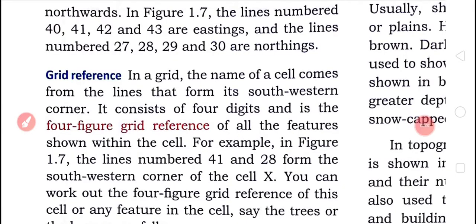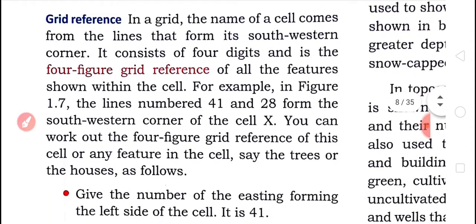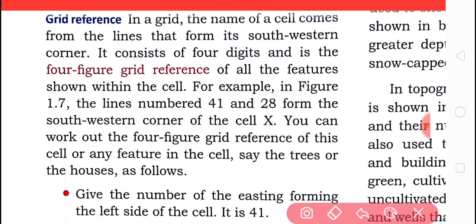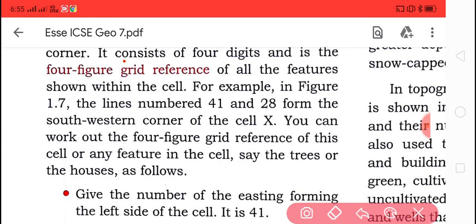In Figure 1.7, the lines numbered 40, 41, 42, and 43 are the eastings, and the lines 27, 28, 29, and 30 are the northings. Now, grid reference: in a grid, the name of the cell comes from the lines that form its southwestern corner. It consists of four digits and is the four-figure grid reference.